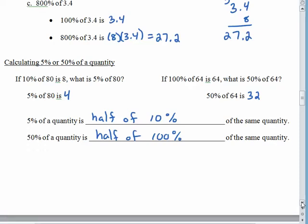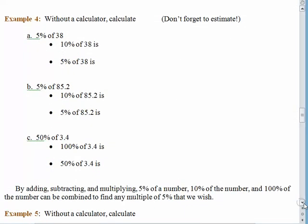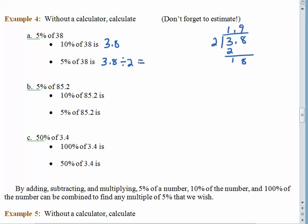If we want 5% of a quantity, we need to find half of 10% of that same quantity. If you want 50%, we need half of 100% of the quantity. We would like 5% of 38: 10% of 38 is 3.8, so 5% of 38 should be 3.8 divided by 2. Without our calculator: 2 goes into 3 once with 1 left over, bring down the 8, 2 goes into 18 nine times — don't forget your decimal point. 3.8 divided by 2 is 1.9.